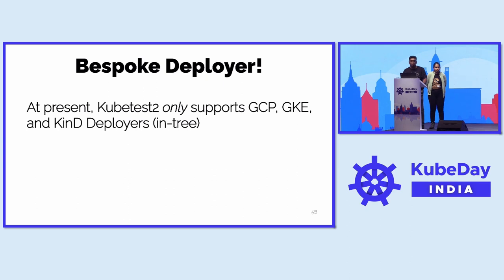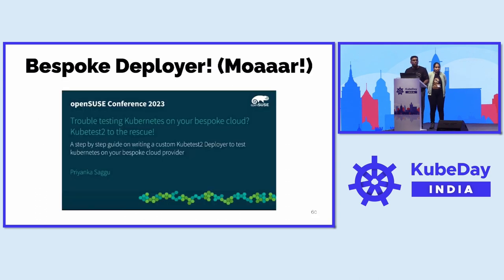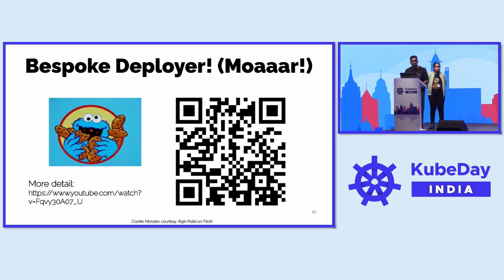We have bespoke deployers. At present kubetest only supports GCP, GKE, and kind deployers in-tree. For other platforms, kubetest enables running custom deployers out of tree — that's how we have an AWS and Microsoft deployer working. You can write your own bespoke deployers. If you want to learn more, my colleague Priyanka has a whole talk on that which you can scan from the slides.